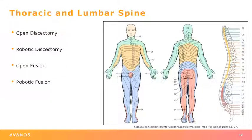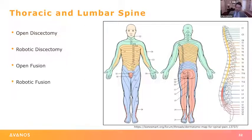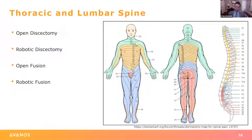Question: Do you still use the same ropivacaine dosing for spine placement? Yes — initial dosing remains the same: 15 to 30 milliliters of 0.5% ropivacaine per side, with 10 milligrams of preservative-free dexamethasone across the whole block and 50 to 75 micrograms of dexmedetomidine across the whole block. We then run the catheters with 0.2% ropivacaine plain at 7 to 12 milliliters per hour per side.